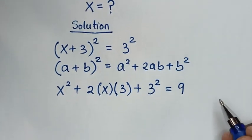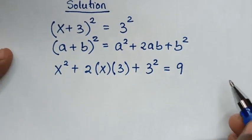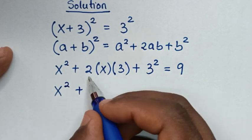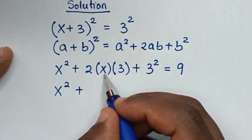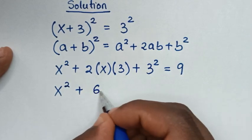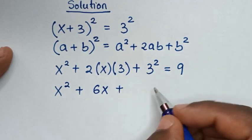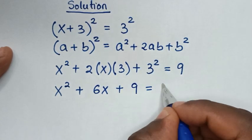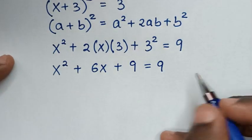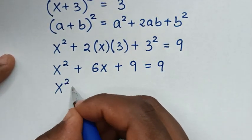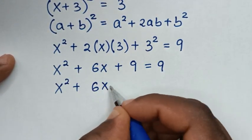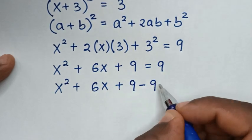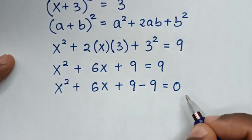That gives us x² + 2x times 3 is 6x, plus 3² which is 9, is equal to 9. Then it will be x² + 6x + 9, and we take 9 to the right side as minus 9, equal to 0.